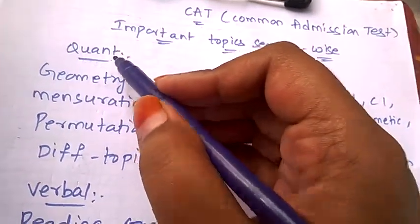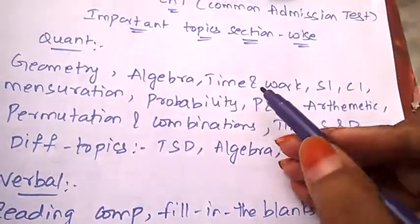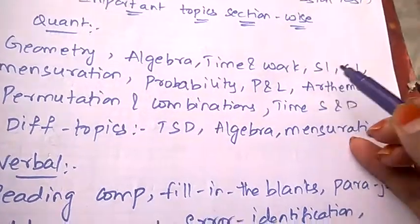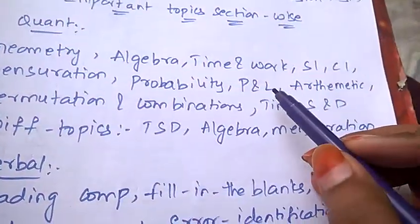For quantitative aptitude, the important topics are geometry, algebra, time and work, simple interest, compound interest, mensuration, probability, profit and loss, arithmetic problems, permutation and combination, time speed and distance.